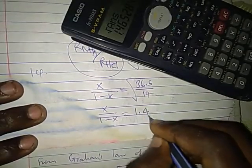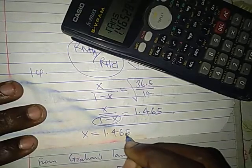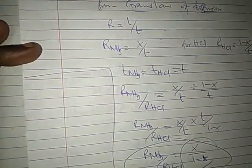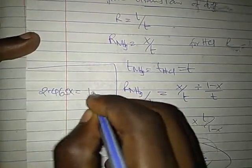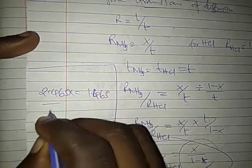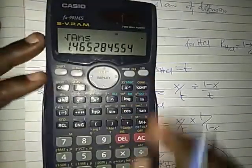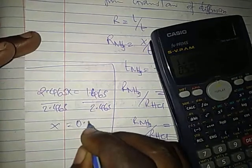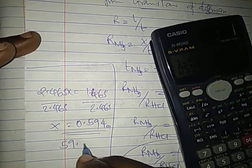We multiply and cross-multiply to get x equals 1.465 minus 1.465x. Bringing them together, we add to get 2.465x equals 1.465. Divide by 2.465, and we get x equals 0.594 meters.